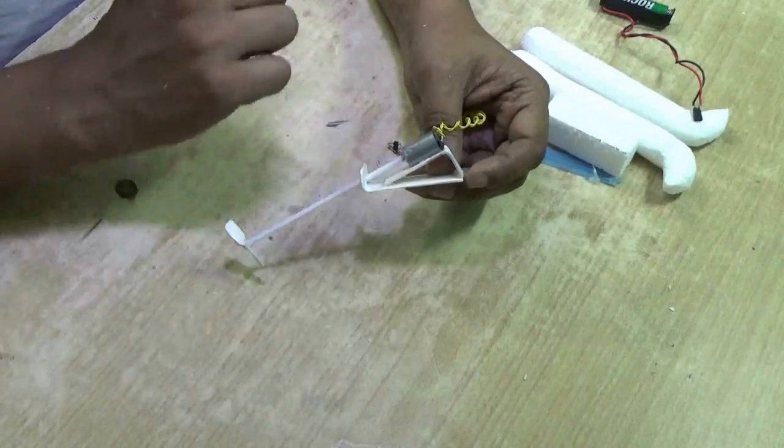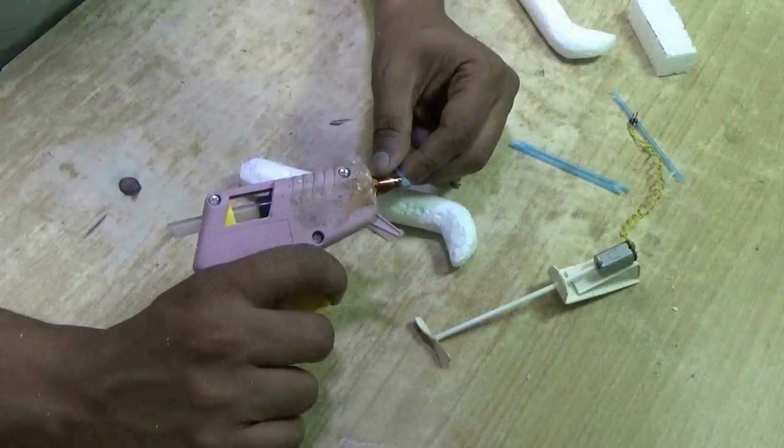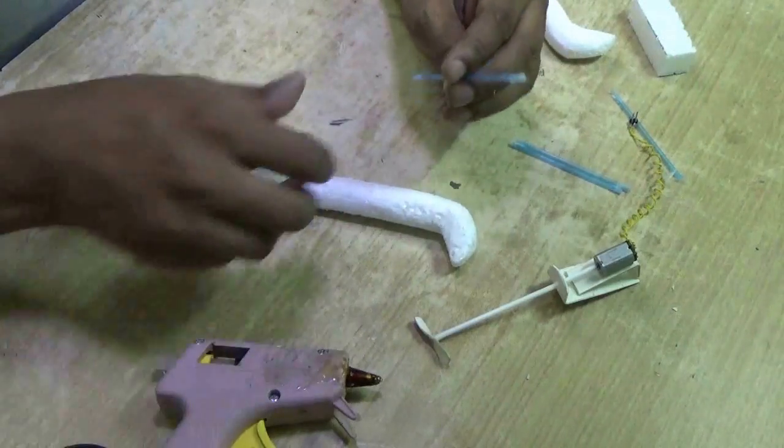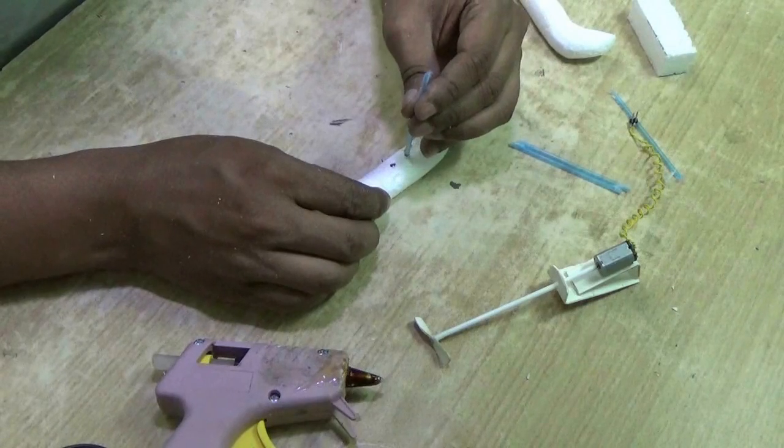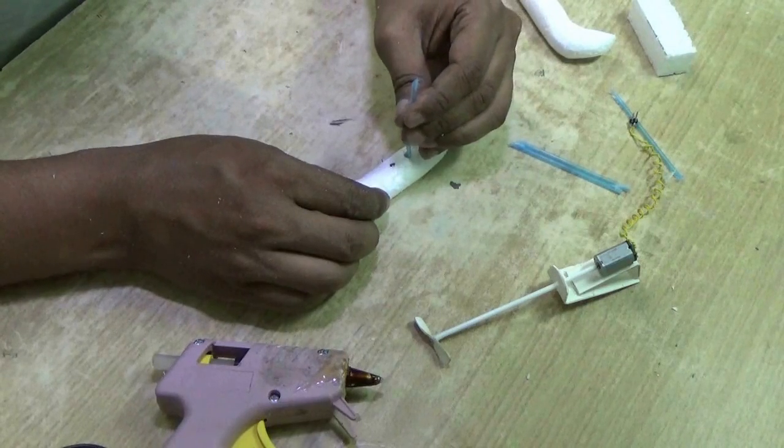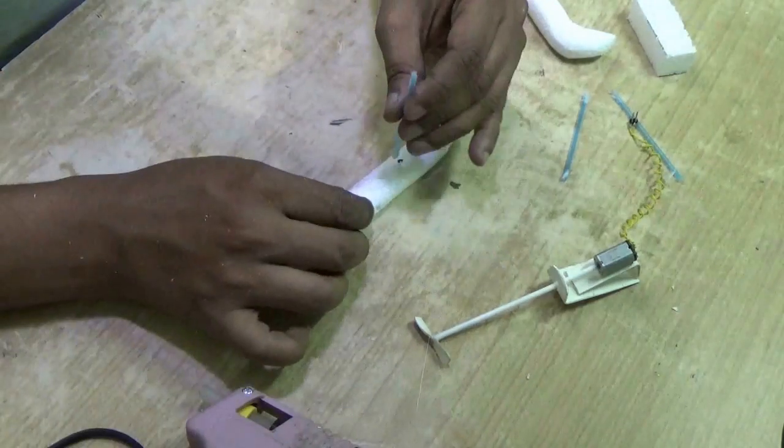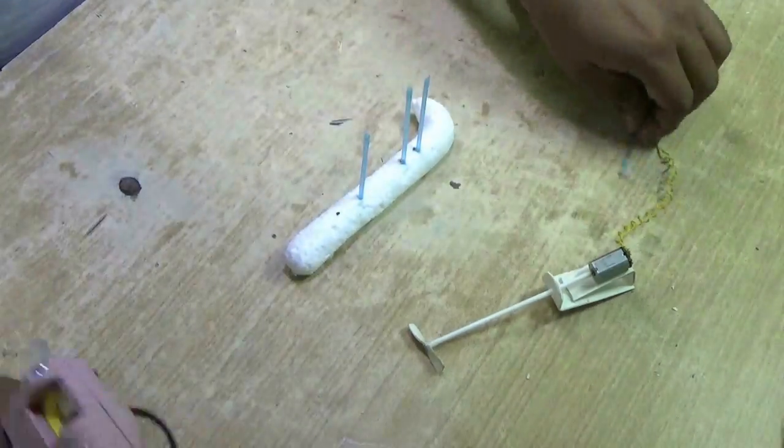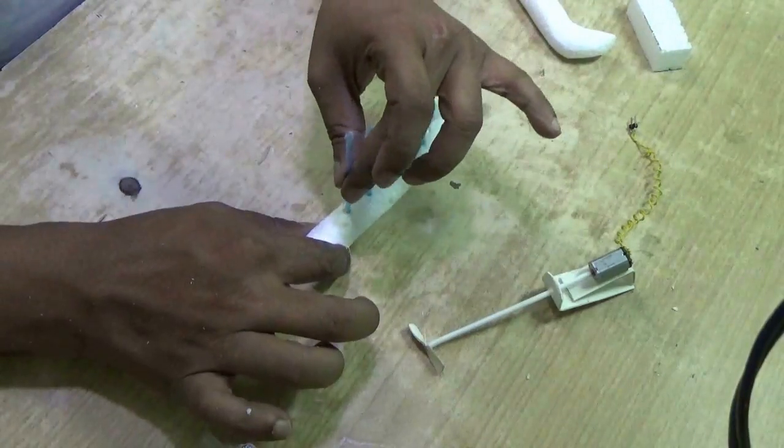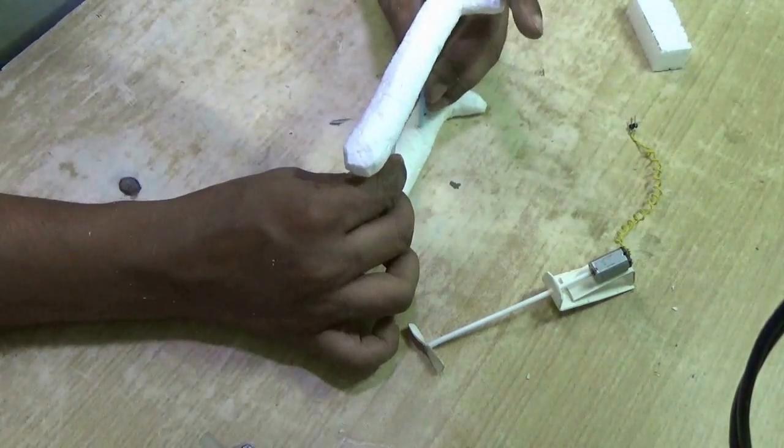Now put the glue on the pipes we got from buds and stick them into the float on the marked points. Stick all four pipes there.